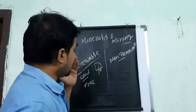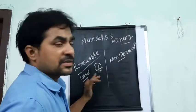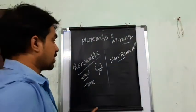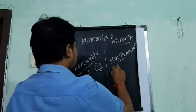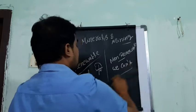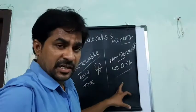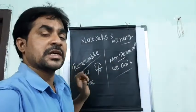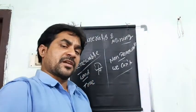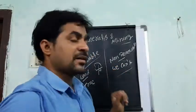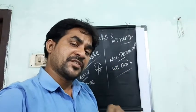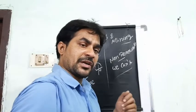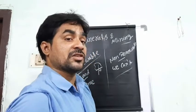Renewable minerals are those which can be regenerated and reused — wood is the example. Non-renewable minerals are those which we cannot regenerate or reproduce. Once used, they cannot be reused. For example, coal can be used once but cannot be used again. Gold can be made into jewelry but cannot be reproduced.